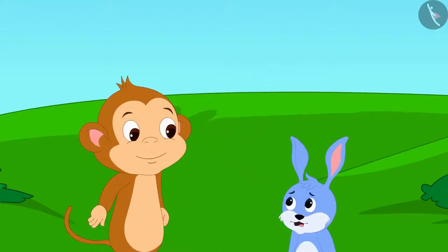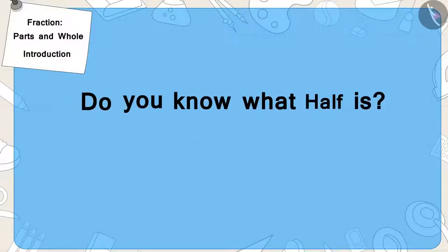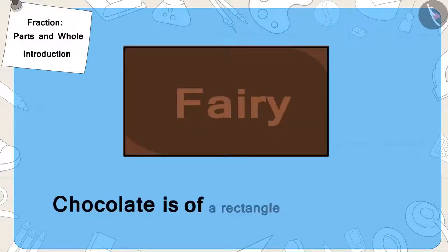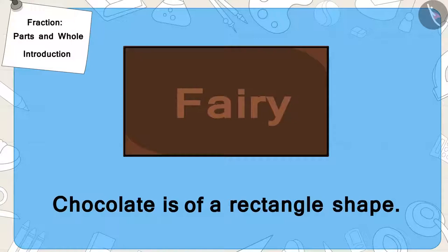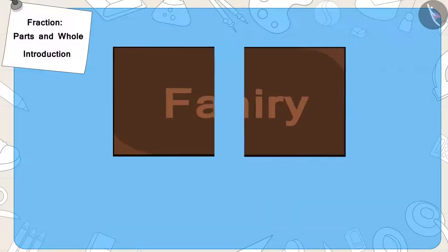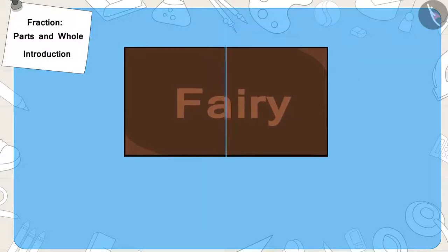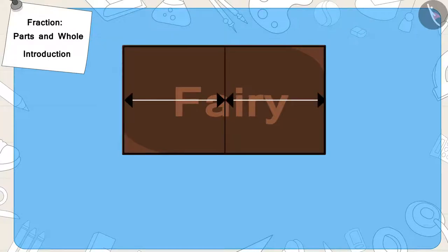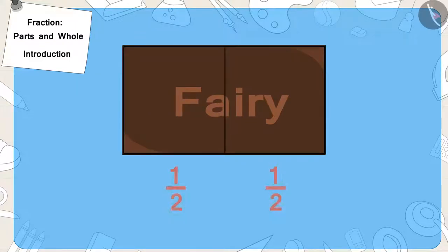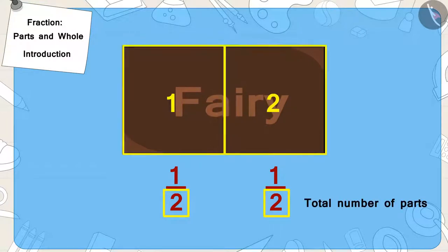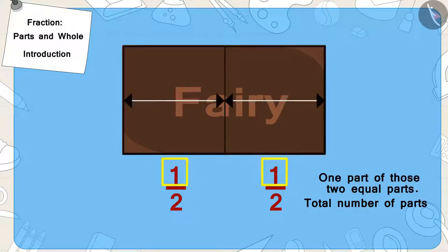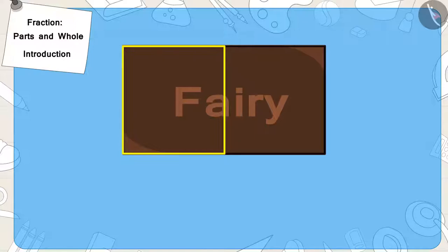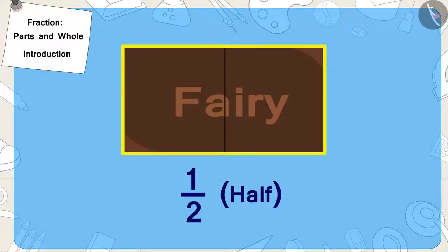Babban told Bunny he could pluck the mango by climbing up the tree, but in return, he would have to give him half of the chocolate. Children, do you know what half is? Suppose Bunny's chocolate is of such a rectangle shape. If we divide it into two equal parts like this, this part is one part of these two equal parts. We can write it as a fraction — two is the total number of parts and one is one part of those two equal parts.